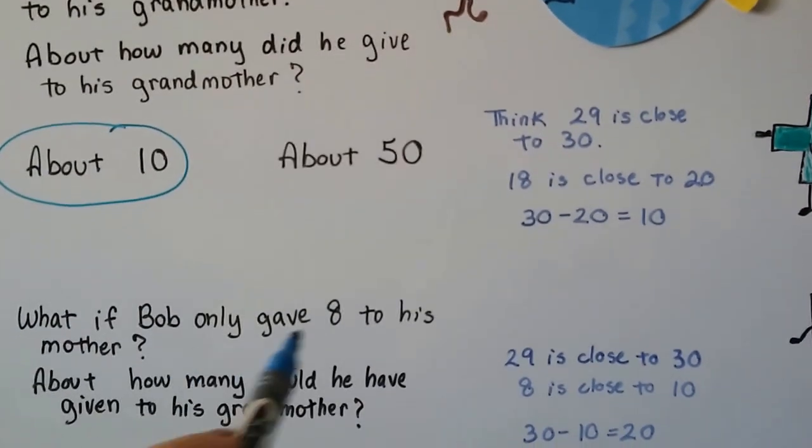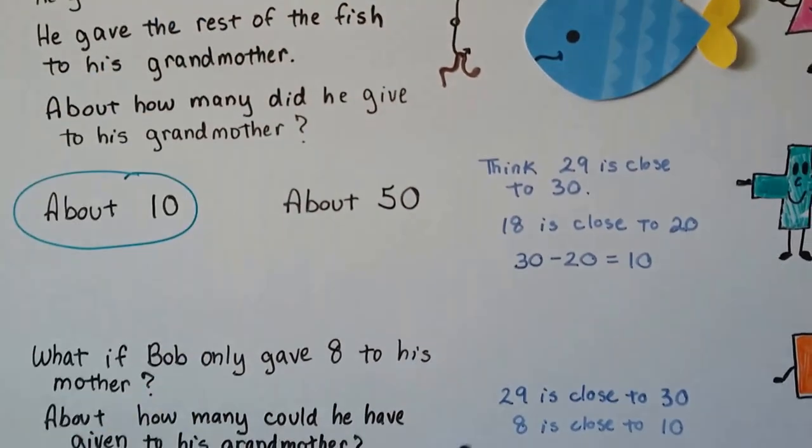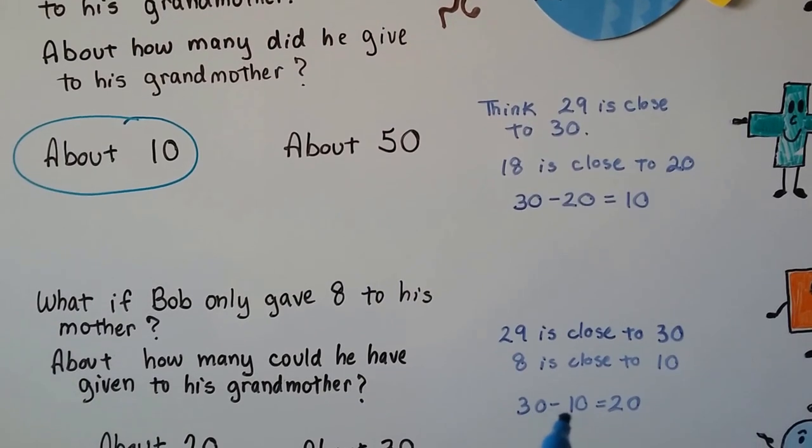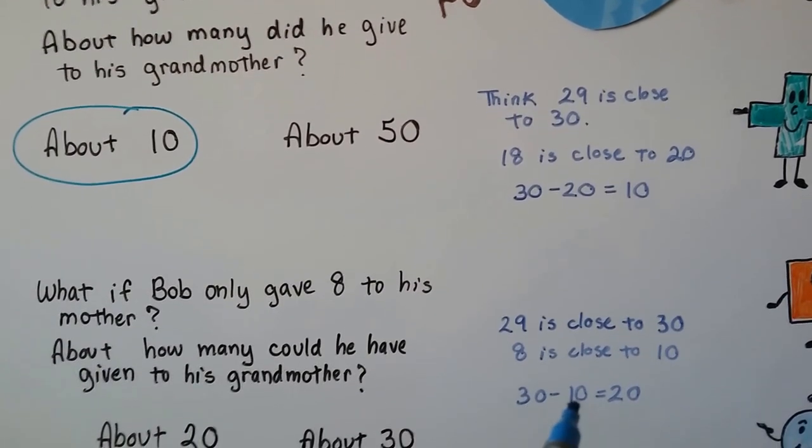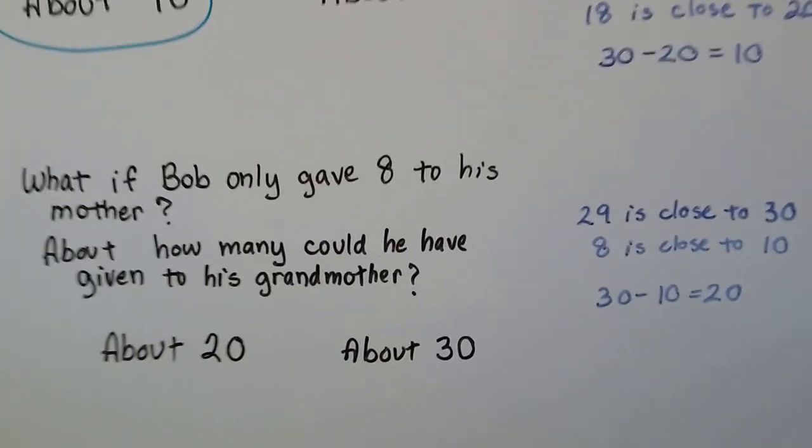And 8, if he had only given 8 to his mother instead of 18, if he had only given 8, well, that's close to 10. So we could do 30 minus 10. 3 tens minus 1 ten is 2 tens. It's 20. It's not the exact amount. It's an estimate.